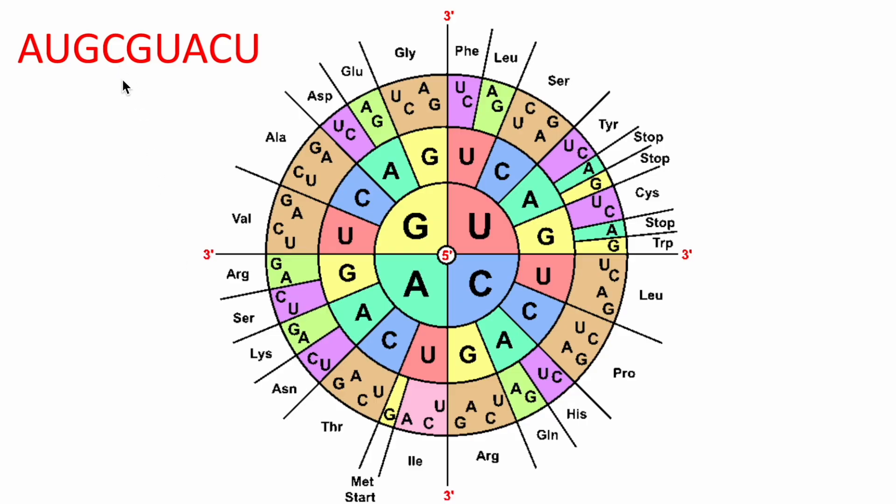All right, let's do another one with our circular chart, and then we're going to move to the table version. CGU is our next codon or group of three. So we'll start in the center here, C, and then we'll find our G, and then we'll find our U, and that gives us ARG, which is our amino acid arginine.